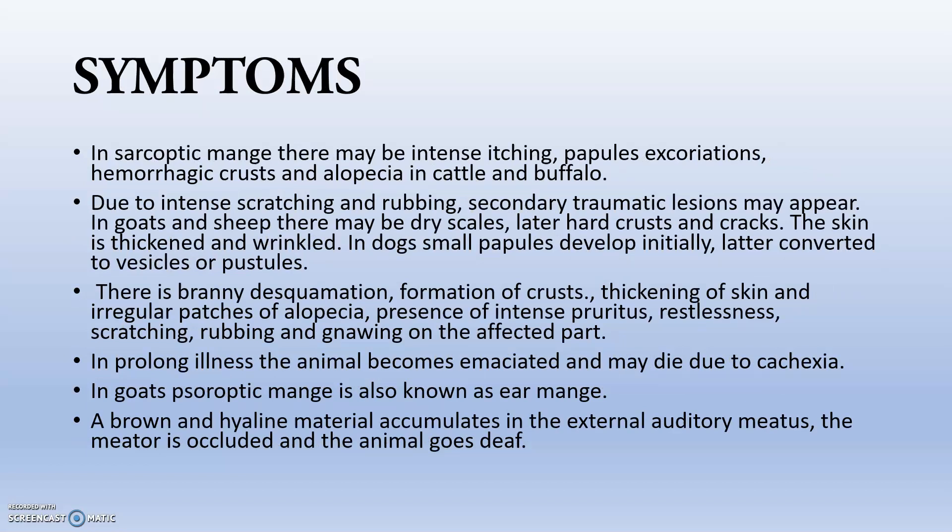Symptoms include itching, intense scratching, rubbing, secondary traumatic lesions, and dry scales. In dogs, small papules initially develop and later convert into vesicles or pustules. Sometimes there is branny desquamation, formation of crusts, thickening of the skin, irregular patches of alopecia, intense pruritus, restlessness, scratching, rubbing, and gnawing of the affected part. In dogs, the psoroptic mange is also known as ear mange.